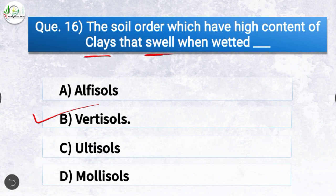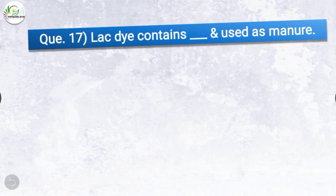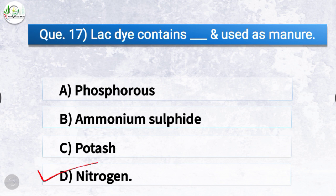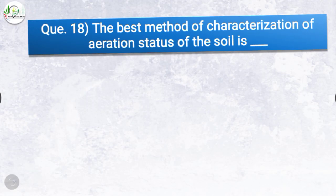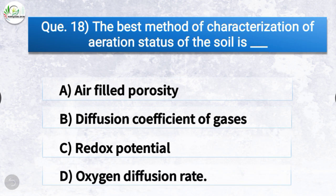Question number seventeen: lac dye contains what and is used as manure? The correct answer is option D, nitrogen. Lac dye contains nitrogen. Question number eighteen: the best method of characterization of aeration status of the soil is? The correct answer is option D, oxygen diffusion rate.